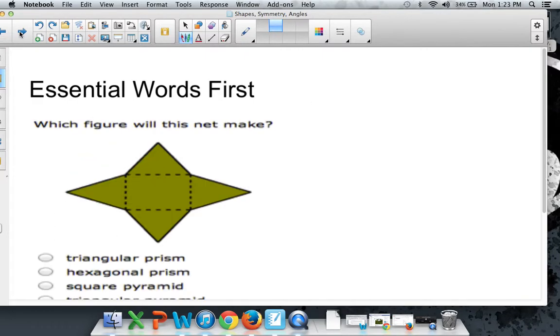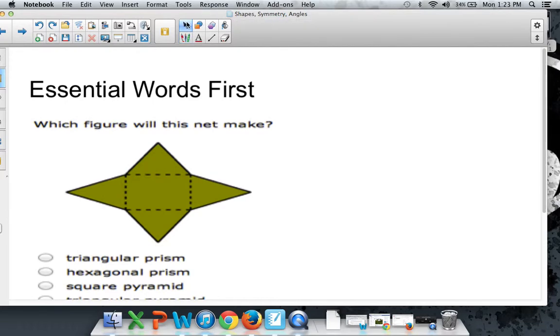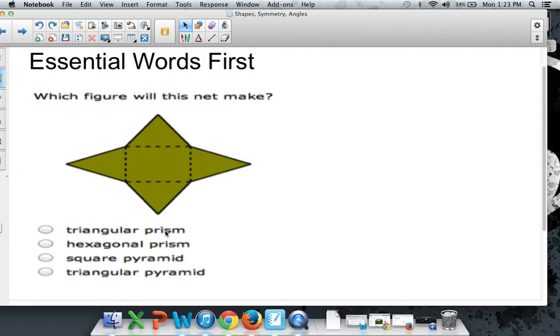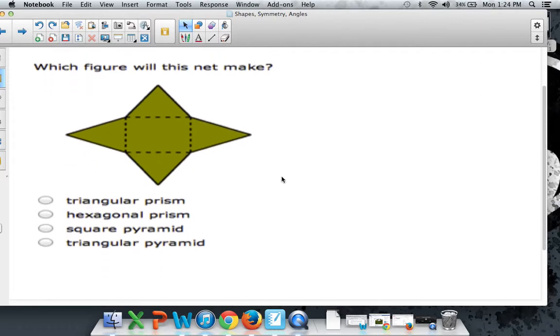Here's a little riddle for you. Which figure will this net make? Well, a net is a 3D shape that's all unfolded. So you look at this and you ask yourself, this is a 3D shape but it's unfolded. If I fold it on those dotted lines and put all the pieces together, so to speak, what shape would it make? A triangular prism, a hexagonal prism, a square pyramid, or triangular pyramid?